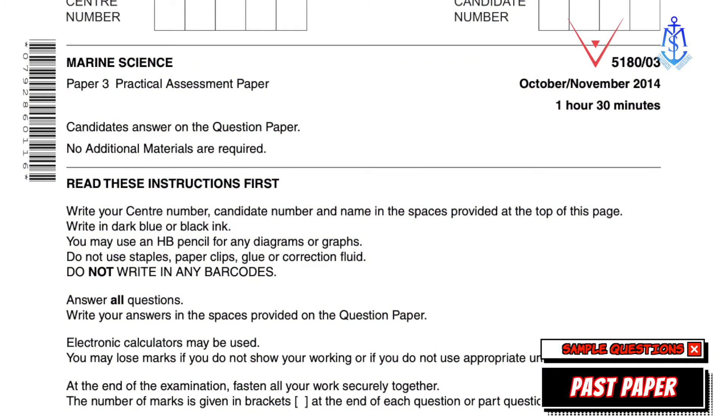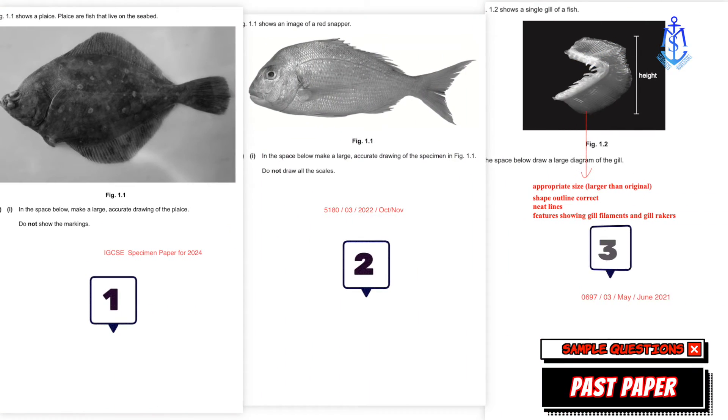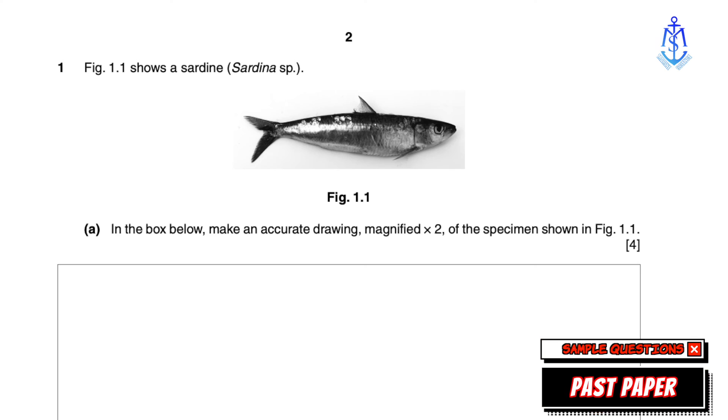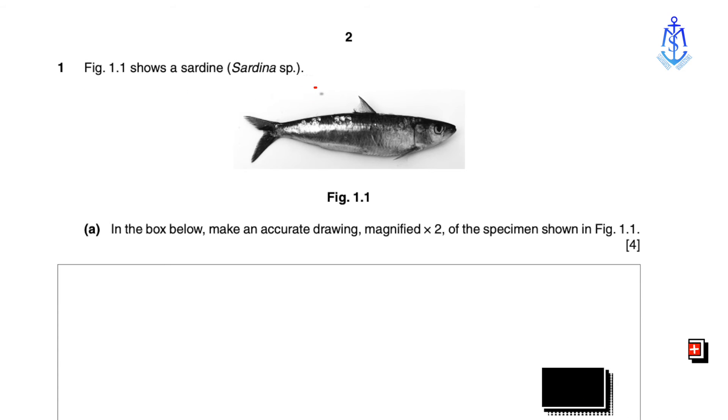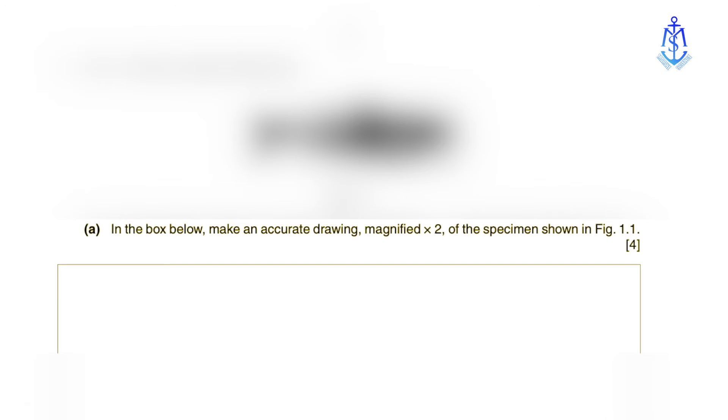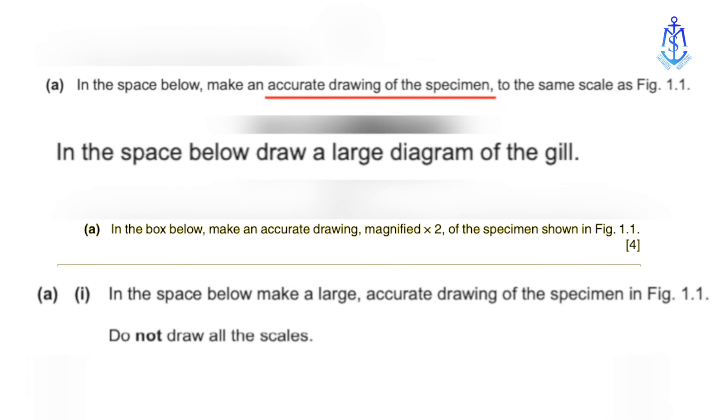This question is taken from the 5180 paper 03 October November 2014 practical assessment paper, and similar types of questions are still present in the new syllabus. In figure 1.1 you'll find an image depicting a sardine. The task requires you to create an accurate drawing magnified by a factor of two of the specimen shown in figure 1.1. Sometimes instructions might ask for just an accurate drawing or a large accurate drawing, so pay close attention to what the question specifies.